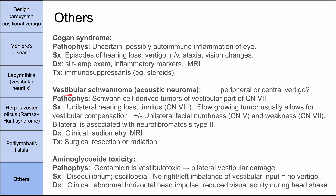Worth knowing is vestibular schwannoma, or acoustic neuroma — a Schwann cell-derived tumor of the vestibular part of cranial nerve 8. It's slow-growing, so it primarily causes unilateral hearing loss and tinnitus first. It doesn't always cause vestibular problems because central vestibular compensation can occur with slow growth; a fast-growing tumor is more likely to produce vertigo and dizziness. If bilateral, think neurofibromatosis type 2. Diagnosis is clinical, confirmed with audiometry showing asymmetric sensorineural hearing loss and MRI revealing a mass in the cerebellopontine angle. Treatment is surgical resection or radiation.